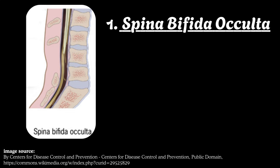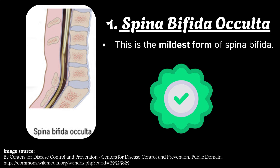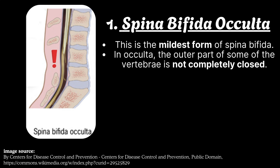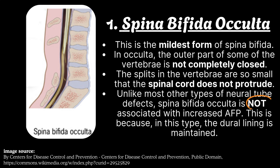Number 1: Spina bifida occulta. This is the mildest form of spina bifida. In occulta, the outer part of some of the vertebrae is not completely closed. The splits in the vertebrae are so small that the spinal cord does not protrude. Unlike most other types of neural tube defects, spina bifida occulta is not associated with increased alpha-fetoprotein, because in this type the dural lining is maintained.